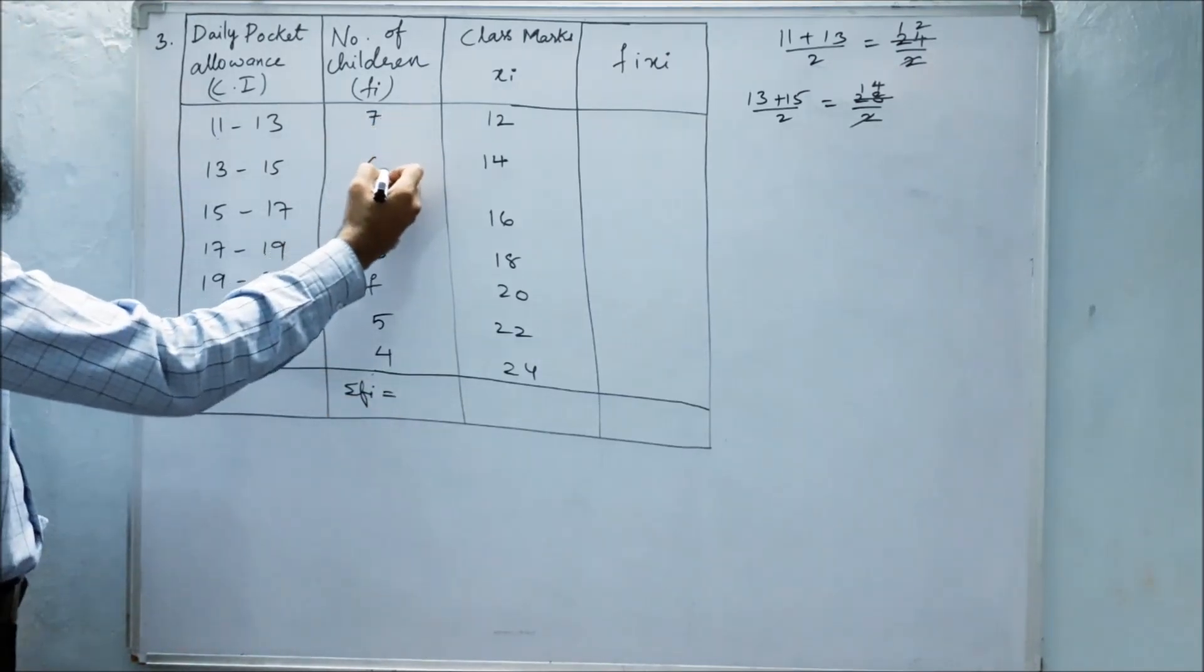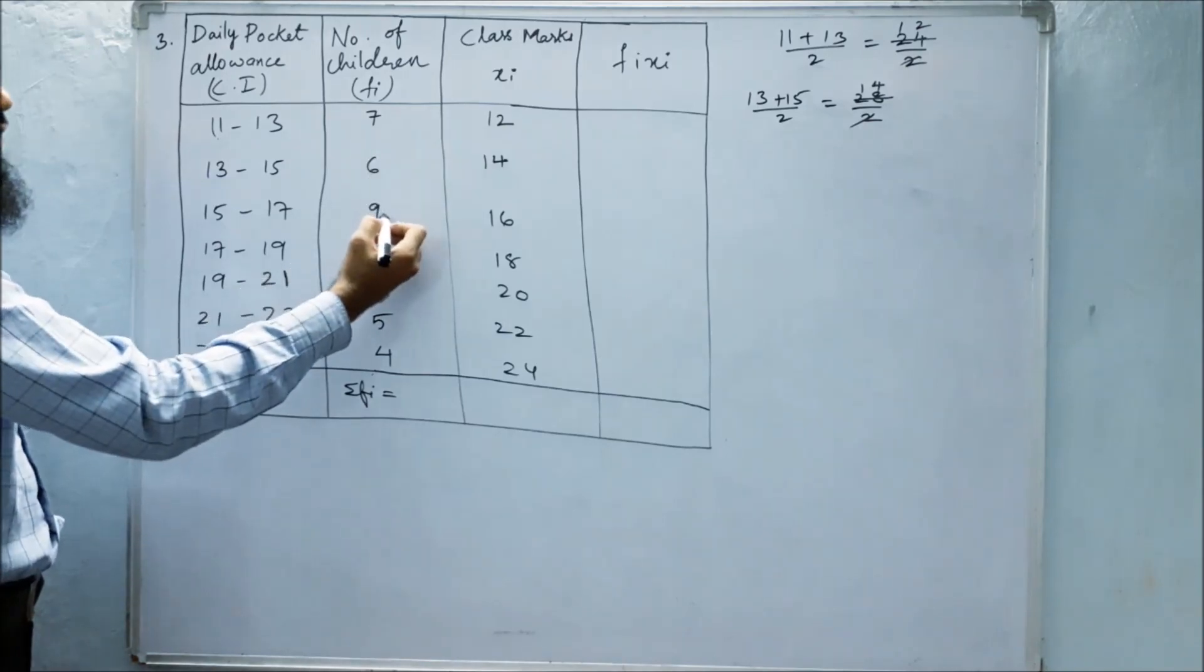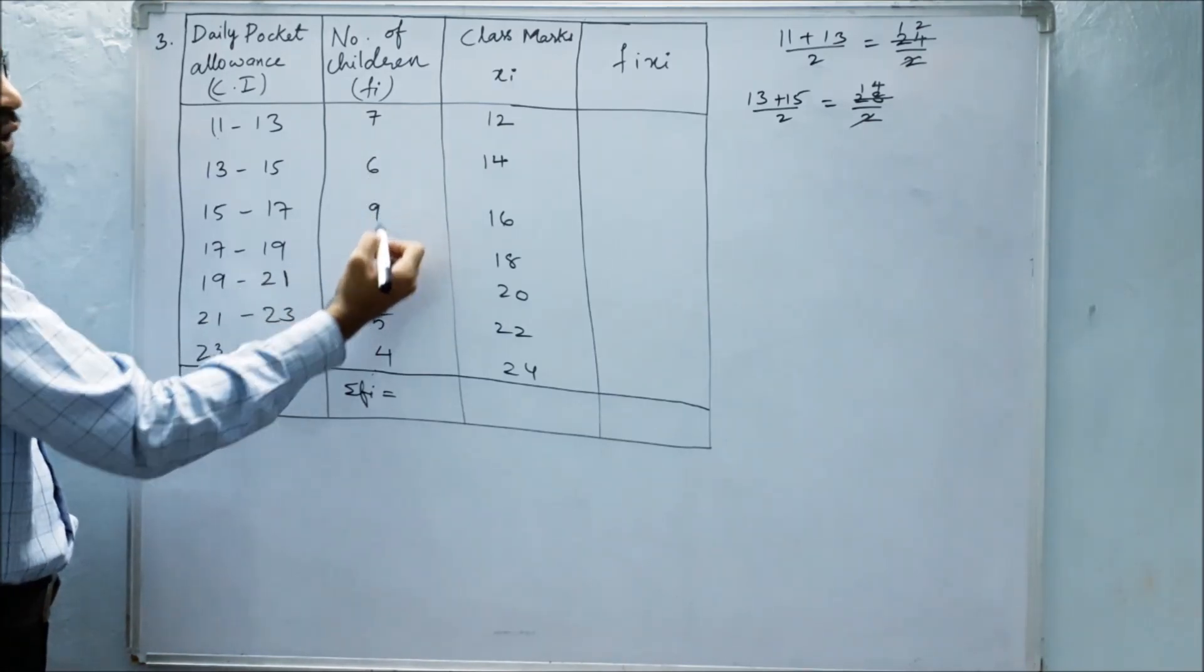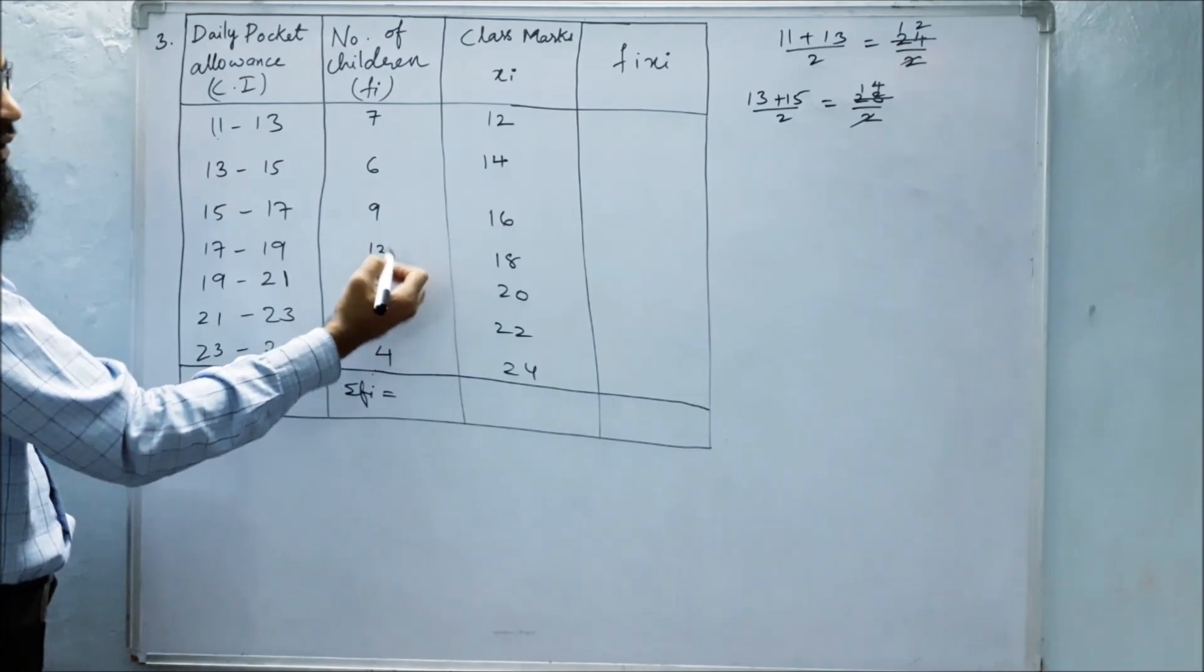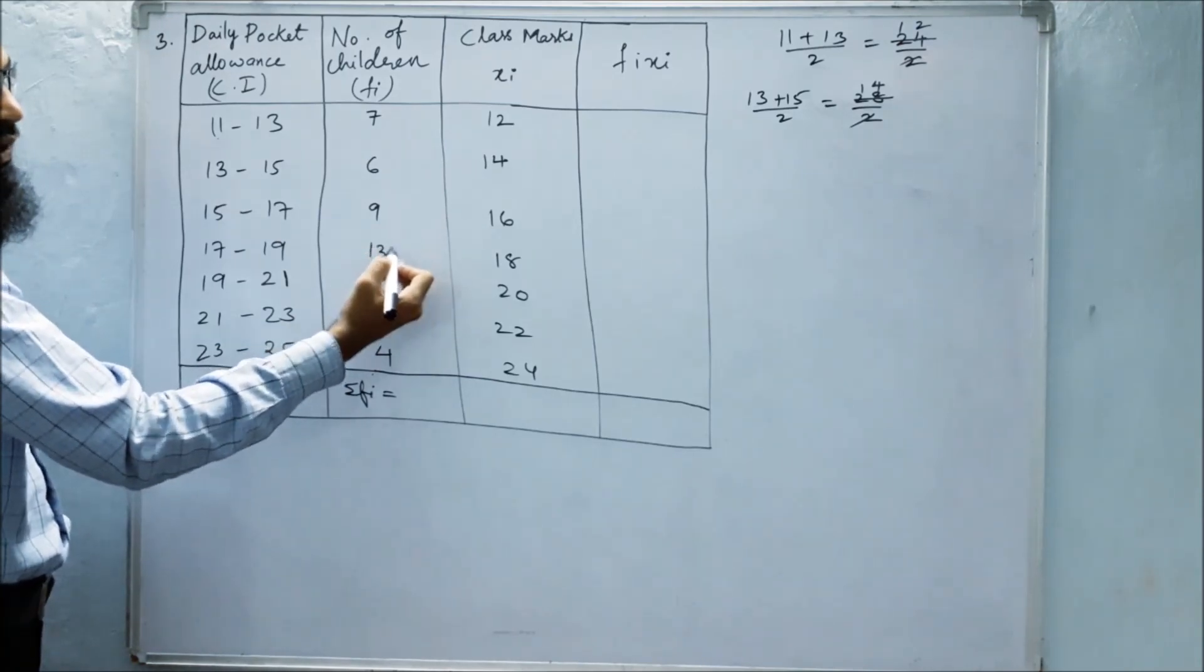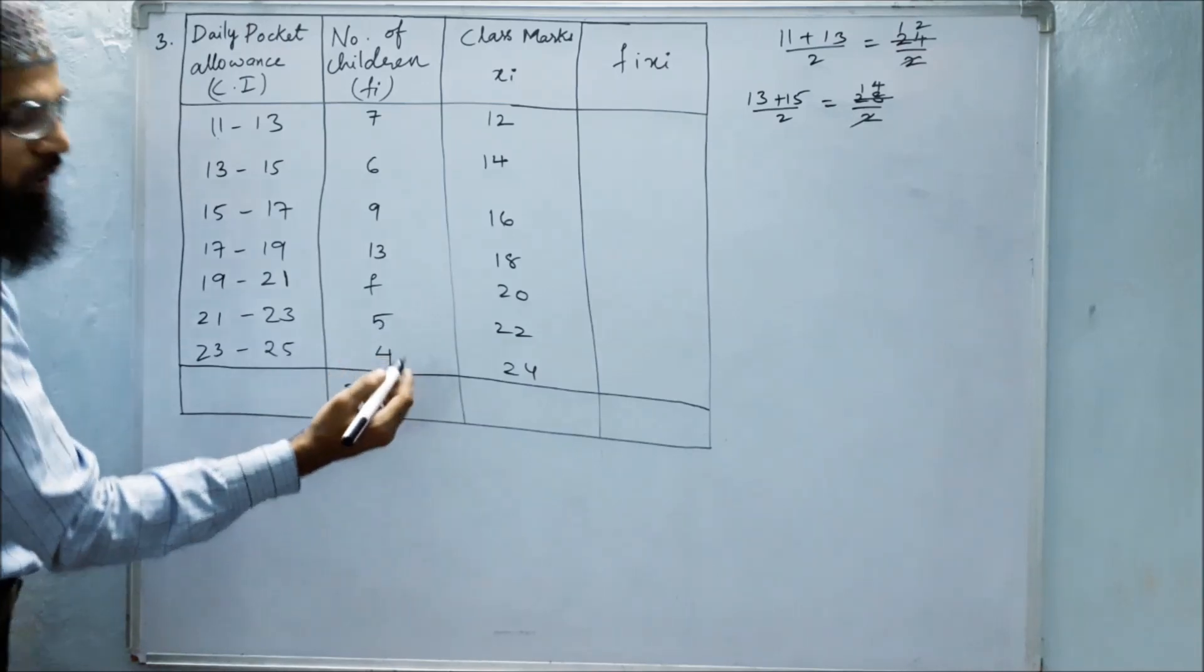Next we will find out the sum of the frequencies: 7 plus 6 is 13, 13 plus 9 is 22, 22 plus 13 is 35, 35 plus f, plus 5 is 40, 40 plus 4 is 44.